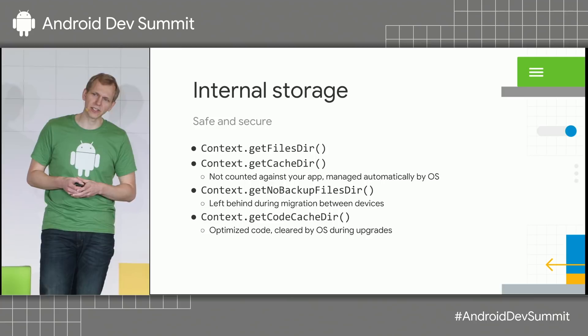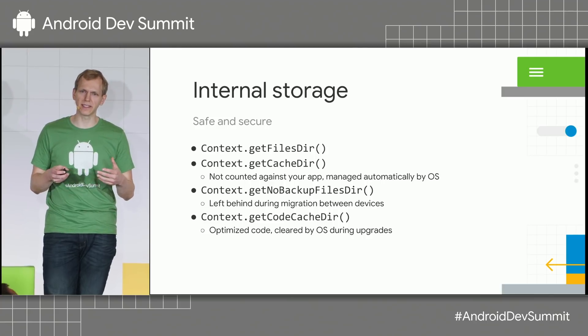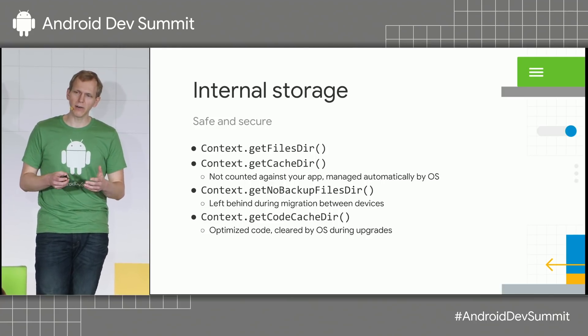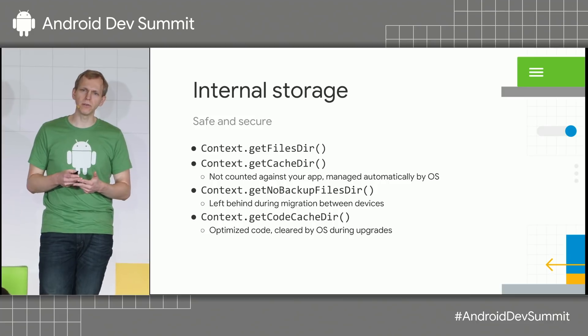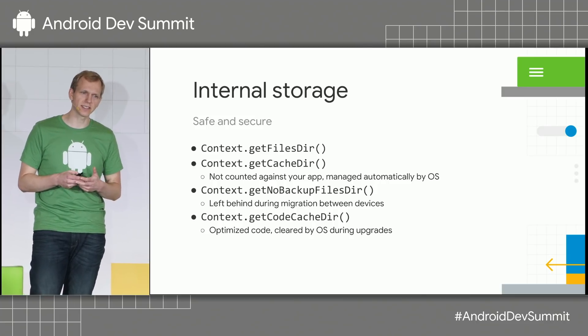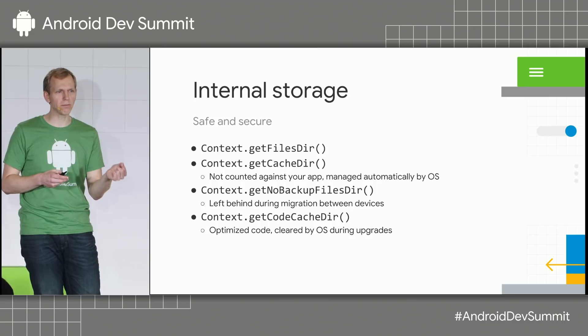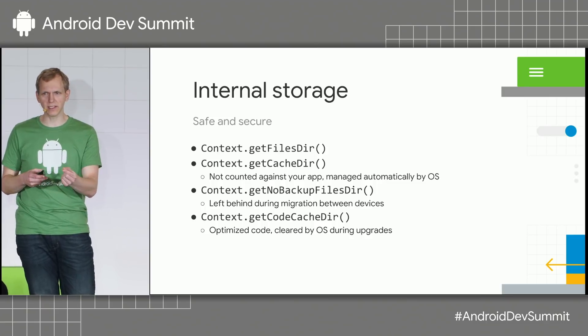Finally, the getCodeCache directory is a great place to store things like JIT-compiled or optimized code. The OS will delete the contents of that directory under two conditions: either when your application is updated via the Play Store, or whenever the OS itself receives an upgrade — say from the O release to the P release. That's a summary of internal storage.